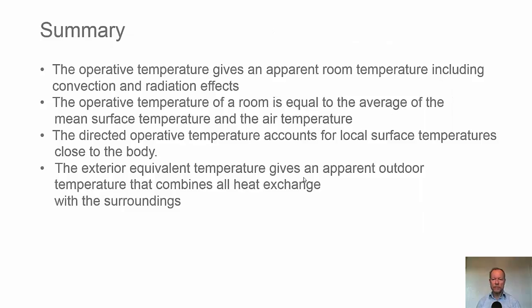Summary. The operative temperature gives an apparent room temperature including convection and radiation effects. The operative temperature of a room is equal to the average of the mean surface temperature and the air temperature. The directed operative temperature accounts for local surface temperatures close to the body. The exterior equivalent temperature gives an apparent outdoor temperature that combines all heat exchange with the surroundings.